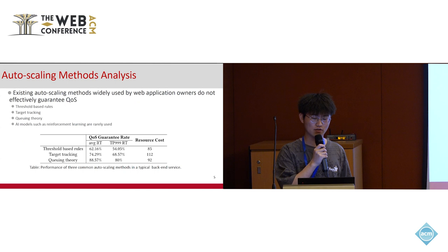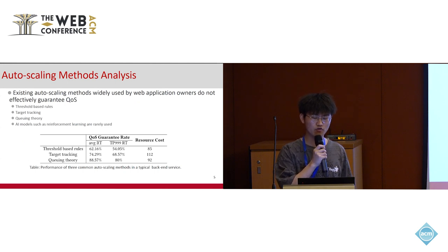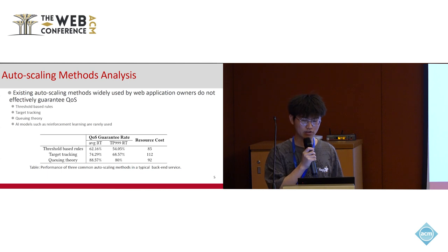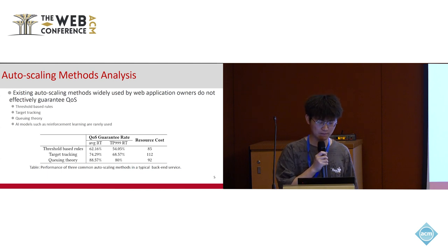As the table shows, when the QoS metric is TP999 response time, the best-performing auto-scaling method had a QoS guarantee rate of only 80%.